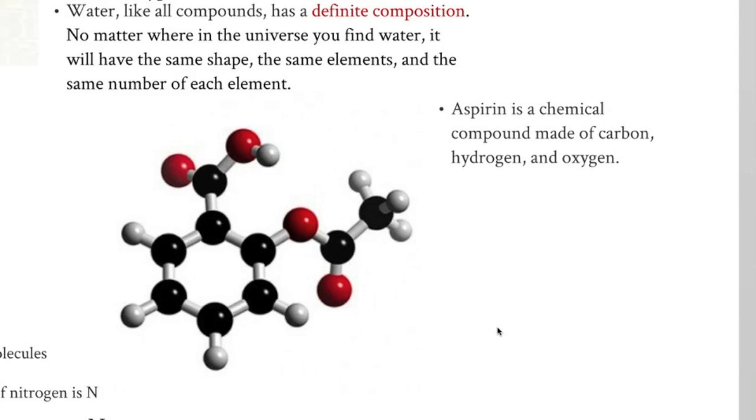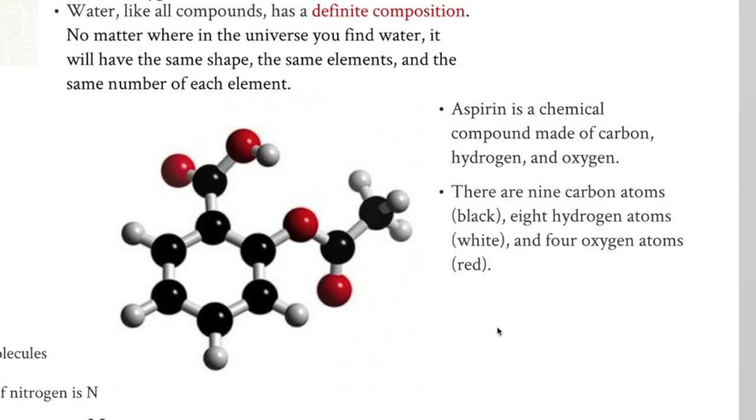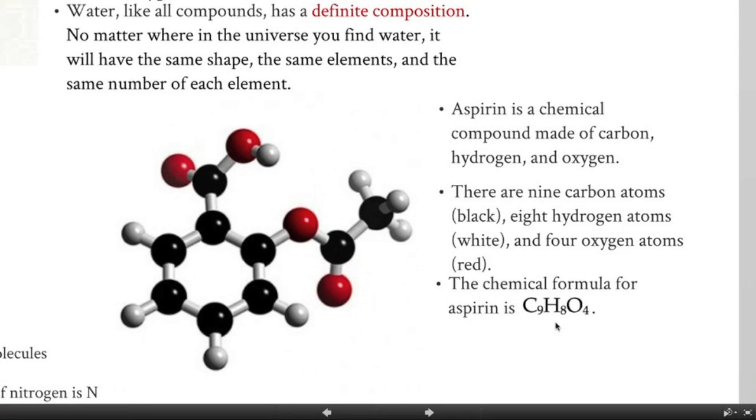This molecule right here is aspirin. Aspirin is a chemical compound made of carbon, hydrogen, and oxygen, three different kinds of atoms. There are nine carbon atoms, the black ones. We have eight hydrogen atoms, which are the white balls. And we have four oxygen atoms, those are the red balls. Therefore, the chemical formula for aspirin is C9H8O4. The formula tells us not only what elements, what atoms there are in a compound, but how many.